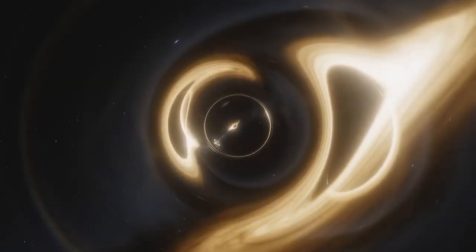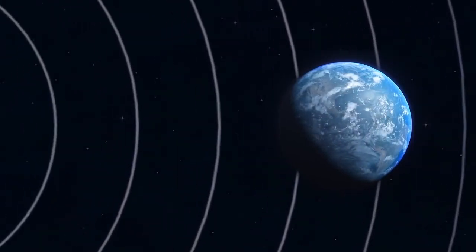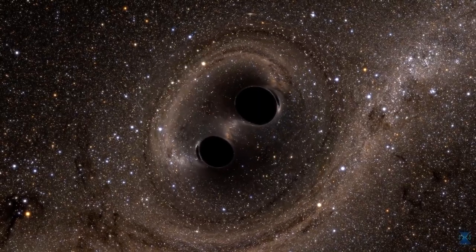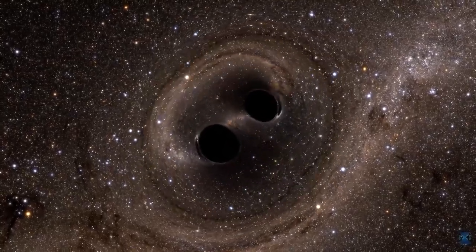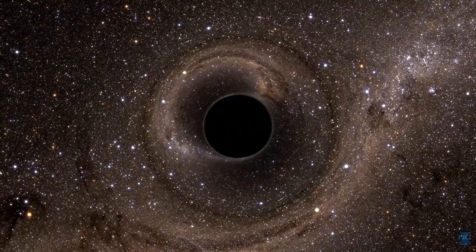According to theories, when two black holes start to interact gravitationally, they will start to orbit one another and close in on one another in an ever tighter spiral. The two black holes will eventually combine into a single larger black hole, but this merger would release a huge quantity of energy.